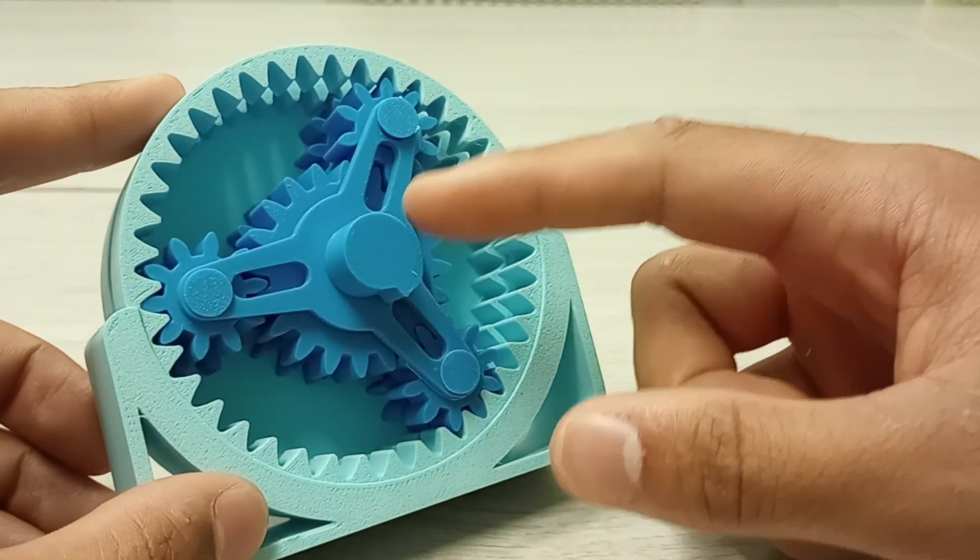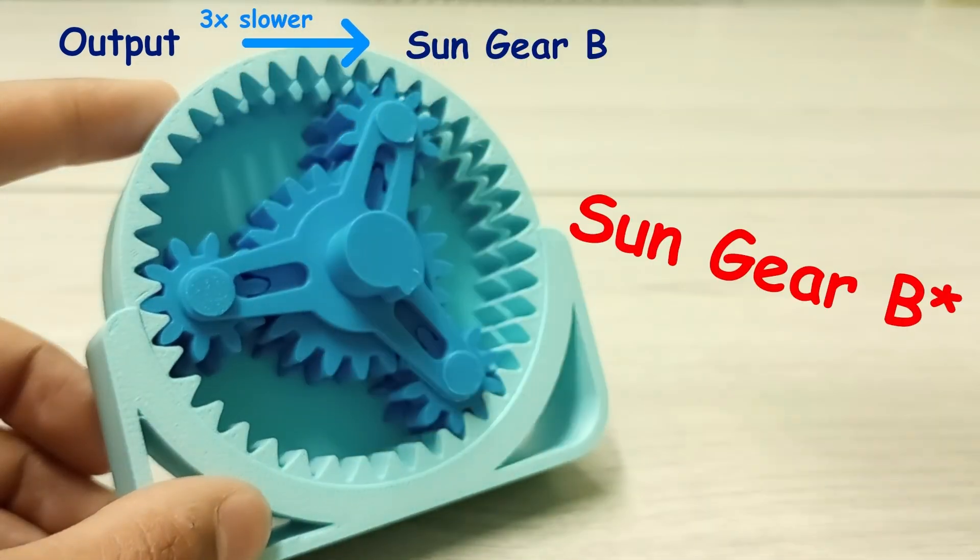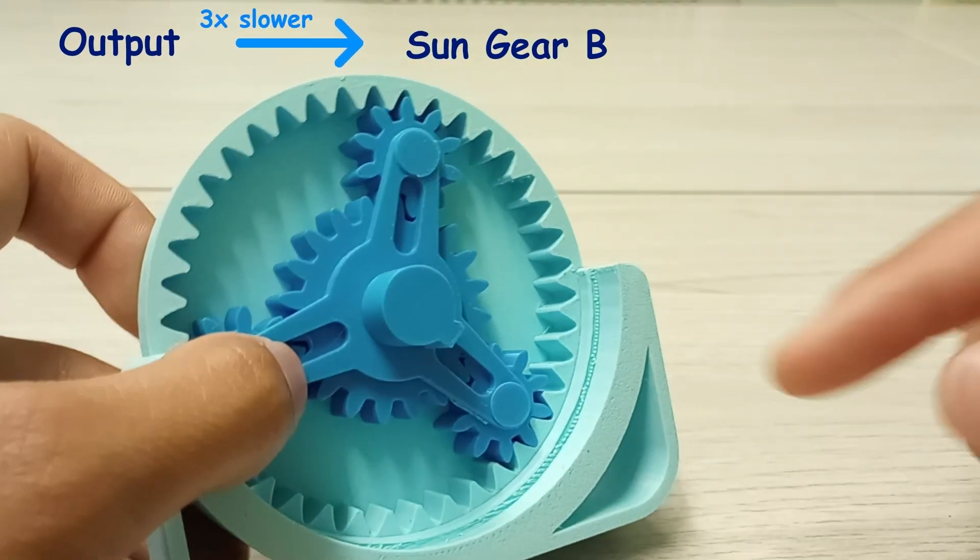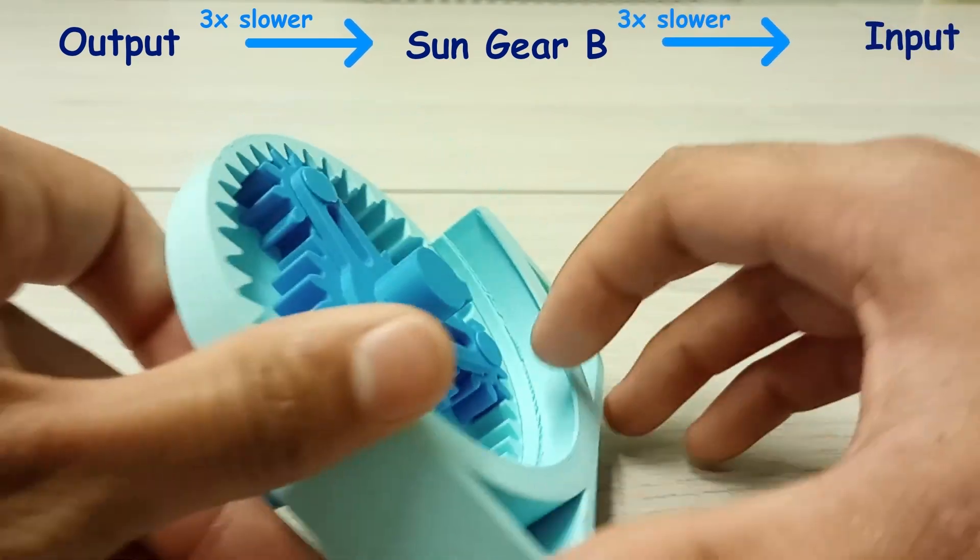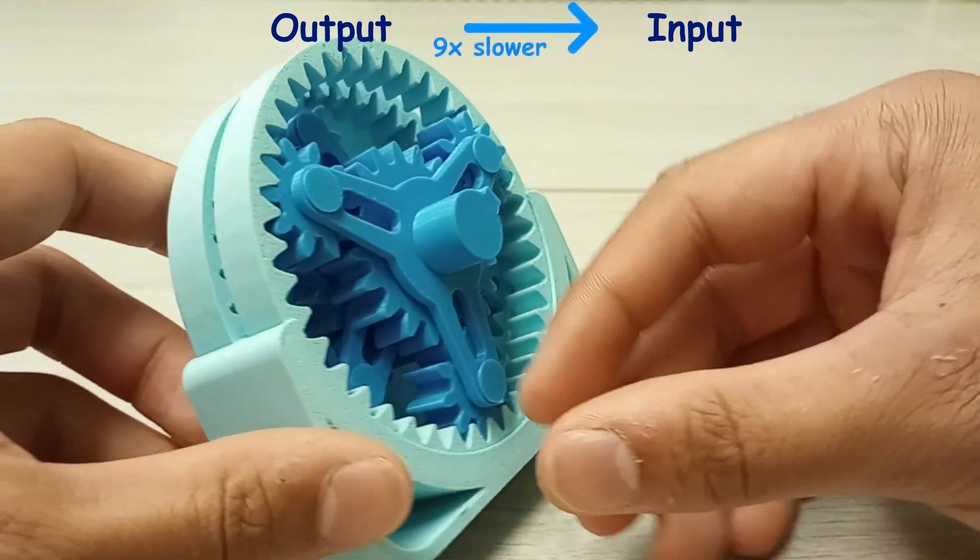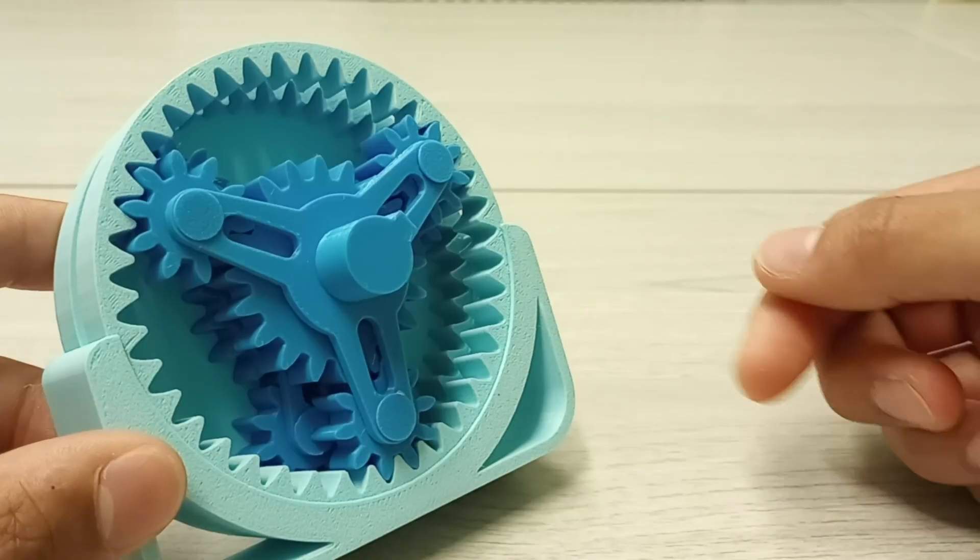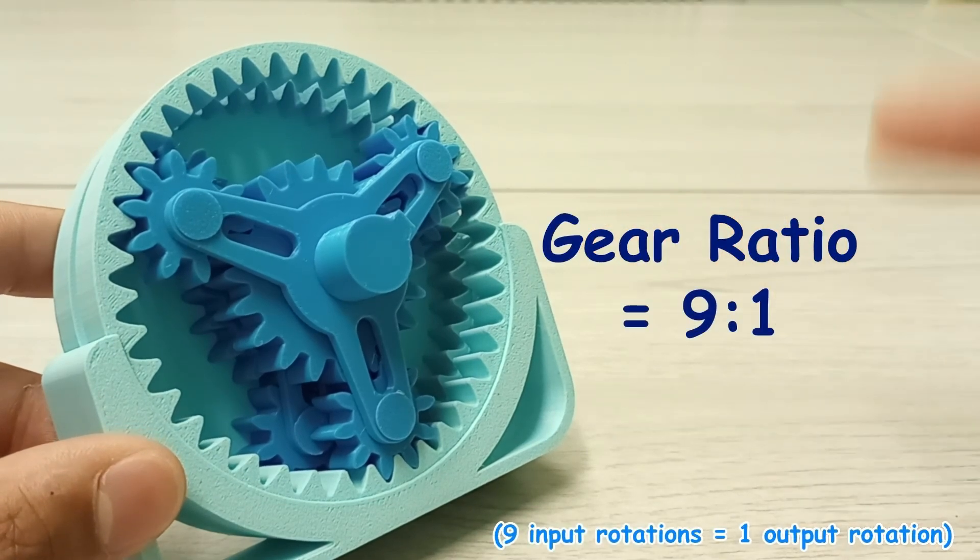So with that now in mind, we know that the final output shaft is three times slower than sun gear A. And since sun gear A is three times slower than the input, we can conclude that the final output shaft is nine times slower than the input. And that gives our planetary gearbox a ratio of 9 to 1.